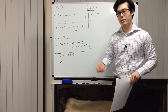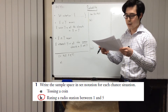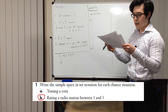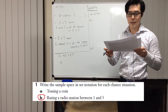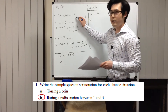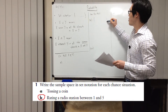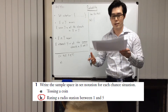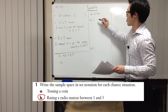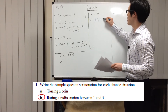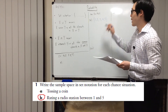Let's get straight into the question. Question 1b says: write the sample space in set notation for each chance situation. Question 1b is rating a radio station between 1 and 5. When it says set notation, you need to write these curly brackets, and then write all the elements — the numbers 1, 2, 3, 4, 5 — inside that bracket. That's what you call your set notation with all the outcomes.